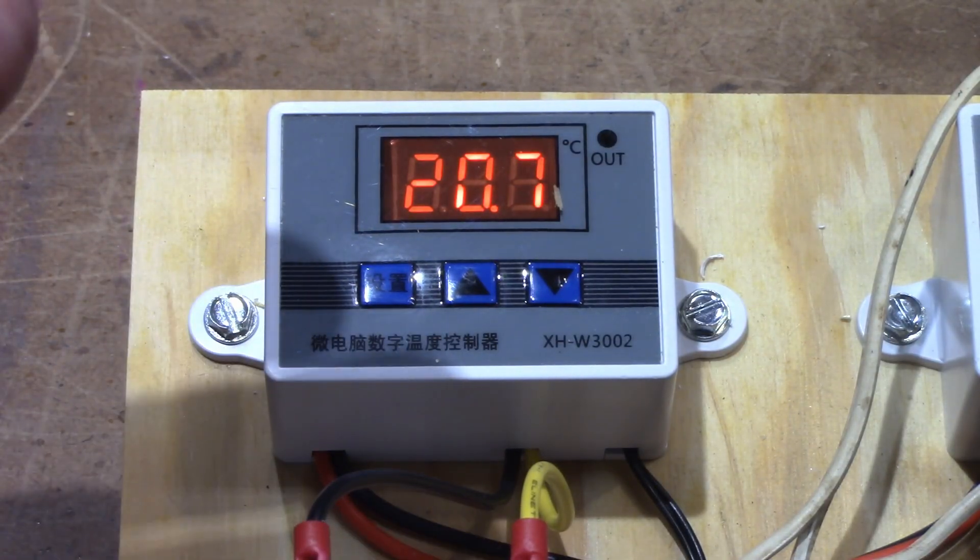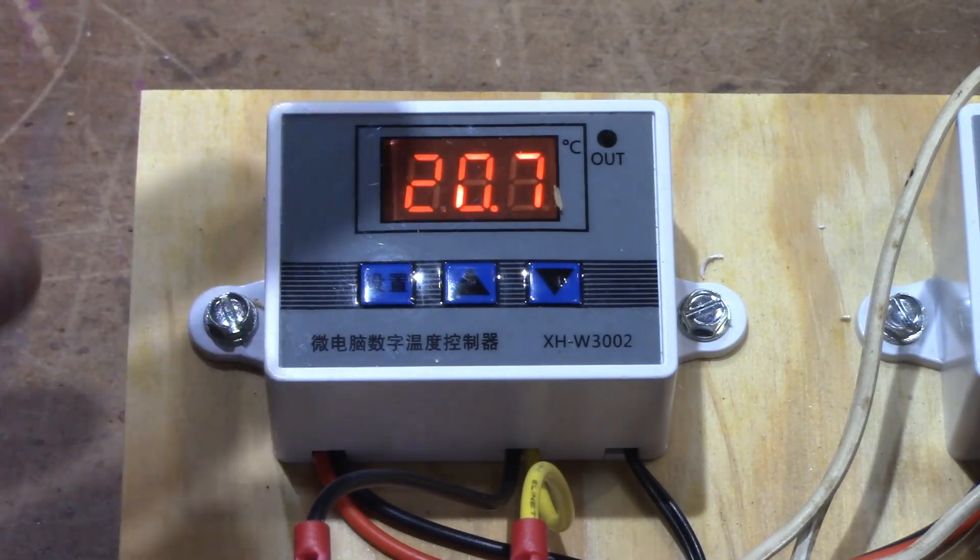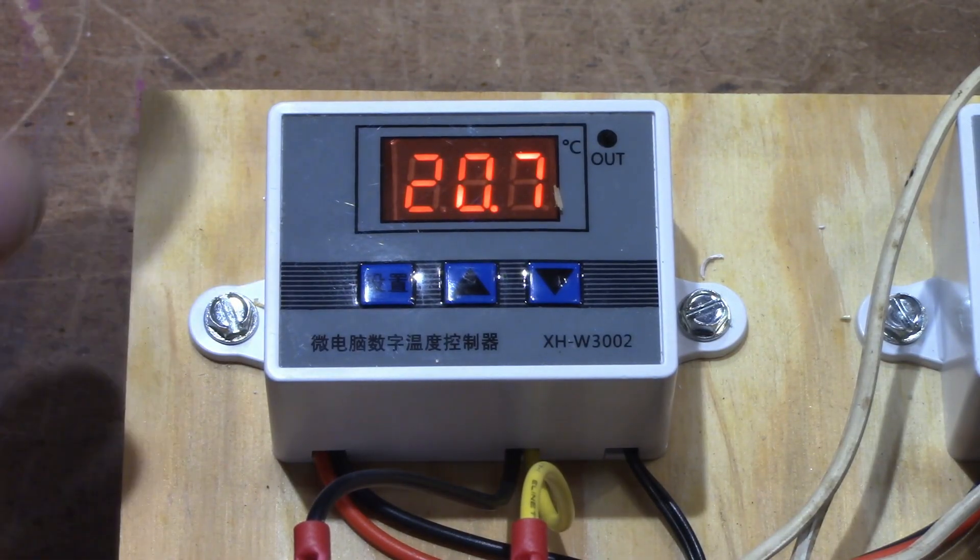So when it gets down to say that 5 degrees that you want it to come on, you can say well when it hits 5, wait a minute and then come on. So you could put a time limit in there. And you can do 0 to 10 minutes in there.